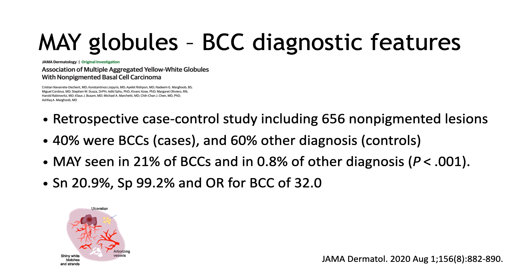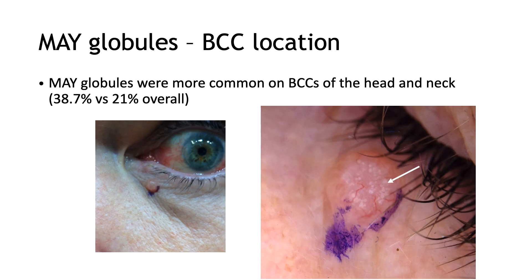The odds ratio for the diagnosis of BCC was 32, making the diagnosis of BCC very likely when MAYG globules were seen. MAYG globules were also associated with BCC location — more commonly seen on BCCs of the head and neck: 38.7 percent of BCCs on the head and neck had MAYG globules versus 21 percent of all BCCs. In this example, you have a pink papule on the lower eyelid; on dermoscopy you have arborizing vessels and MAYG globules — this was a nodular BCC.